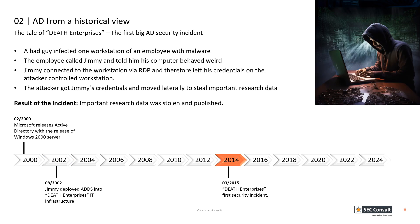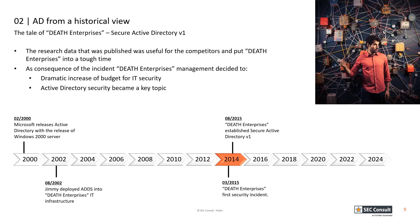Years went by and no crucial security incidents happened — or rather, none were detected — until the beginning of 2015, when a bad actor infected an employee's workstation with malware. The employee called Jimmy and told him his computer was behaving weird. Jimmy connected to the workstation via RDP, and as a result the attacker gained access to Jimmy's credentials. With those credentials, the attacker pivoted through the network and stole important research data of Dev Enterprises, which competitors were able to use to their advantage.